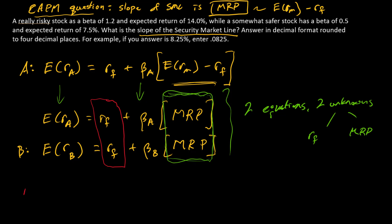I have expected return of A minus beta A times the market risk premium. That's going to equal expected return of B minus beta B times the market risk premium. So again, the way I did this was I solved this equation and this equation for the risk free rate, and then just set those two things equal to one another. And so now I need to isolate market risk premium.